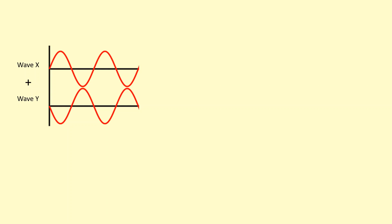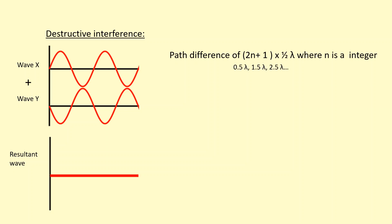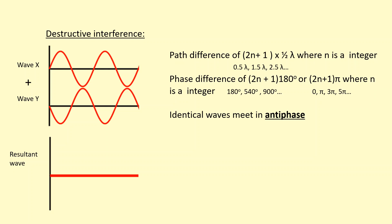When waves meet in antiphase, they superpose and cancel out completely. This is called destructive interference. It normally happens when the path difference is an odd multiple of half a wavelength — for example, half a wavelength, 1.5, 2.5, and so on. This leads to a phase difference of an odd multiple of 180 degrees or an odd multiple of π — for example, 180, 540, or π, 3π, 5π — so they're all meeting in antiphase.